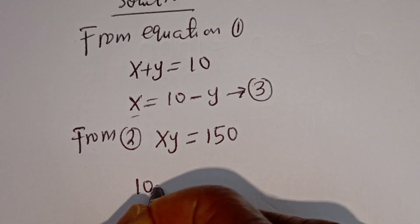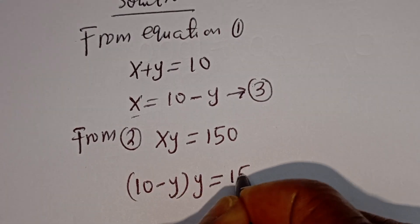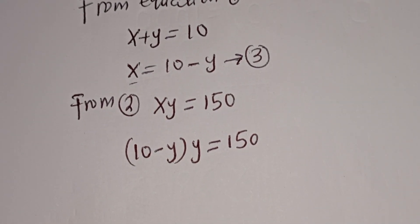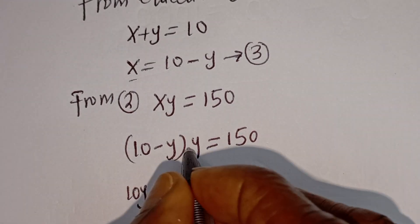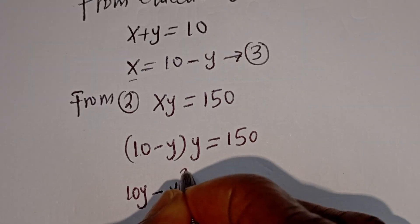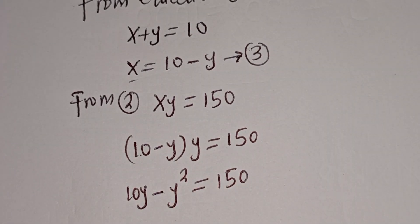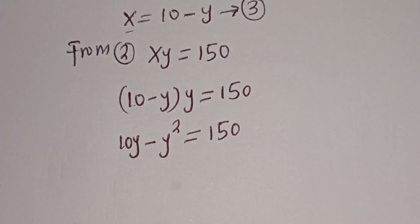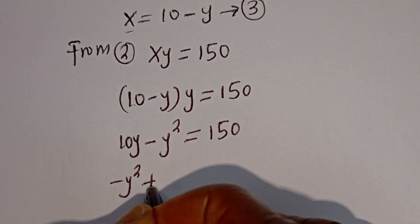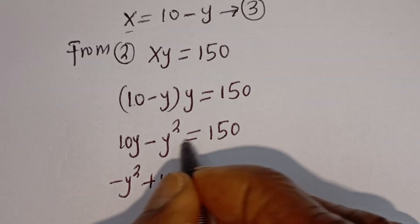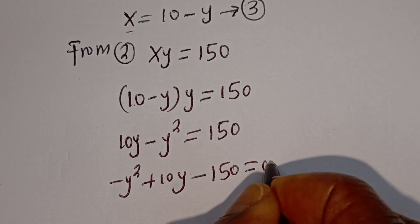From equation 2, X times Y is equal to 150. We can substitute for X there: (10 minus Y) times Y is equal to 150. This gives 10Y minus Y squared is equal to 150. Rearranging: minus Y squared plus 10Y minus 150 is equal to 0.